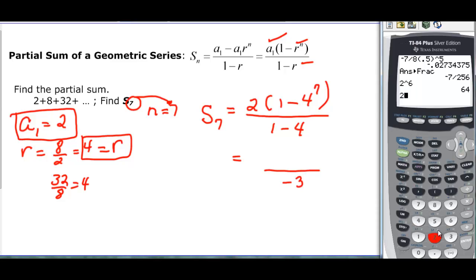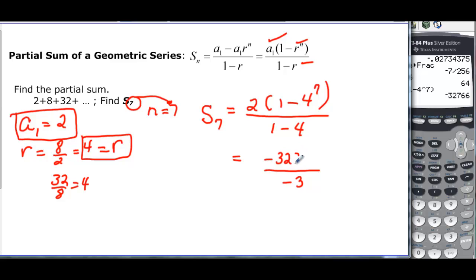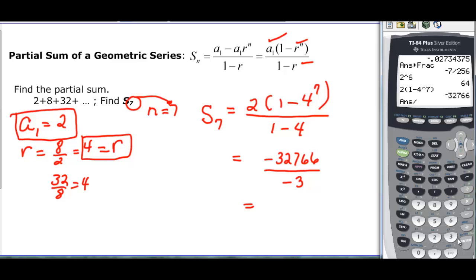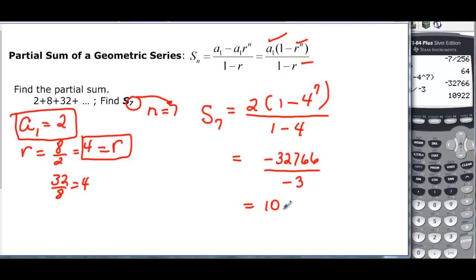And if I do the top, I have 2 times the parenthesis, 1 minus 4 carat 7. Close my parenthesis, and we have negative 32,766 divided by negative 3. So I get a positive number. And then I'm just going to let my calculator do the divided by negative 3. And we get 10,922. If I sum up all those terms in that sequence, all 7 of the first terms, I'll have 10,922.